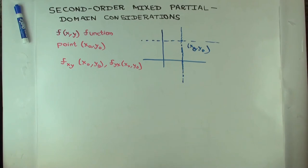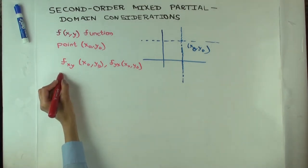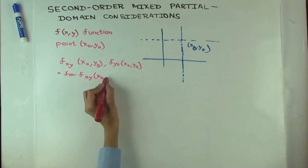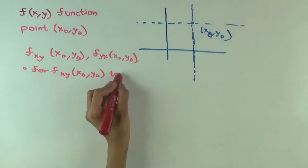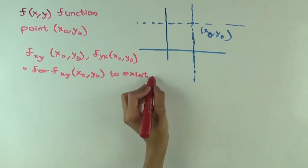So now what I want to do is, I want to ask you, suppose I know that these are defined, or rather, I want these to be defined. What does that tell you about where f is defined? So let's look at f sub xy. Suppose f sub xy of x₀ comma y₀ exists. So what does that mean? Well, for f sub xy of x₀ comma y₀ to exist, what do we need?